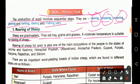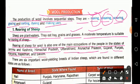Rearing of sheep for wool is also one of the main occupations of people in the states of Jammu & Kashmir, Himachal Pradesh, Uttarakhand, Arunachal Pradesh, Gujarat, Punjab, Haryana, Rajasthan, and Sikkim. In these states, rearing of sheep has been adopted as a main occupation and livelihood.